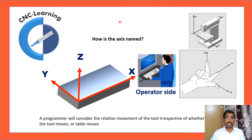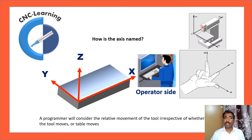Another important thing: a programmer will always consider the relative movement of the tool. In your machine, the tool may be moving or the table may be moving. The movement of the Z axis will be on the slide and Y axis on the head, so effectively the tool will not move for feeding into the part — the table will be moving. But you need not worry about what is physically moving; you need to consider the relative movement of the tool for the axis.